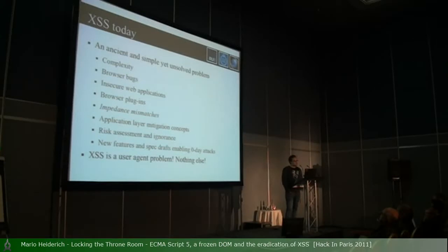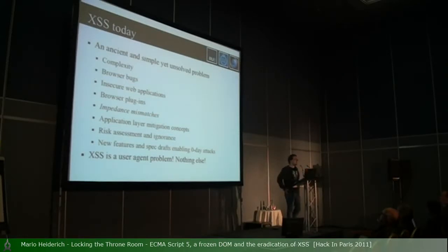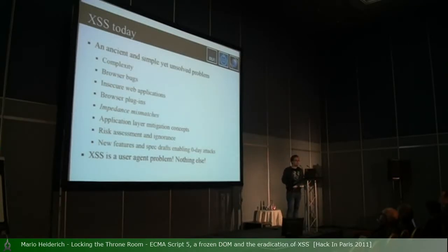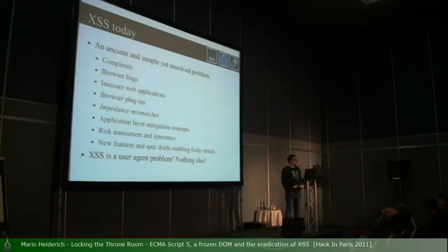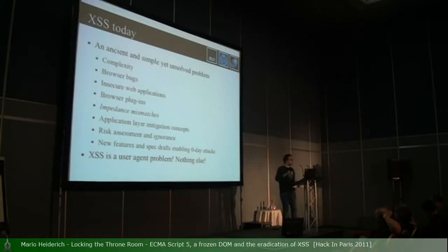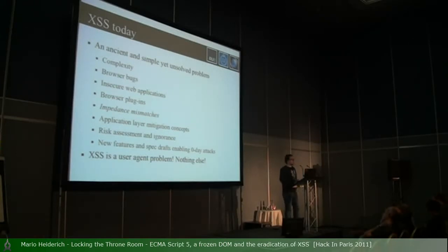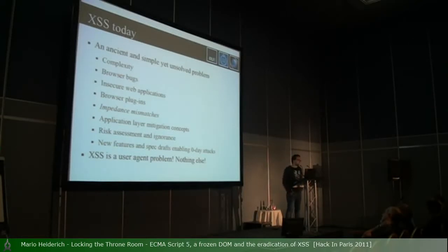So what are we doing wrong? Why is this problem still unsolved? There are some reasons. First is complexity — modern web applications are really complex. If you look at the source code of Gmail, it's massive: so many methods, APIs, and interfaces. It's extremely hard to grasp for one person. Then of course we have browser bugs — even if a website is well protected against XSS, as an attacker you can still conduct XSS by just abusing browser bugs. We have insecure web applications, and we have browser plugins capable of executing JavaScript.